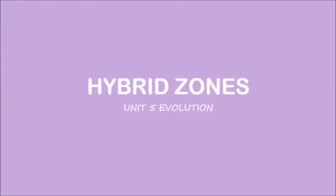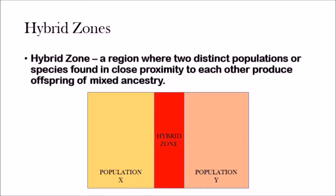Hey guys, my name is Shreyas and welcome to Simple Biology. Today we're going to be looking at hybrid zones. A hybrid zone is a region where two distinct populations or species found in close proximity to each other reproduce and start to form this mixed ancestry.